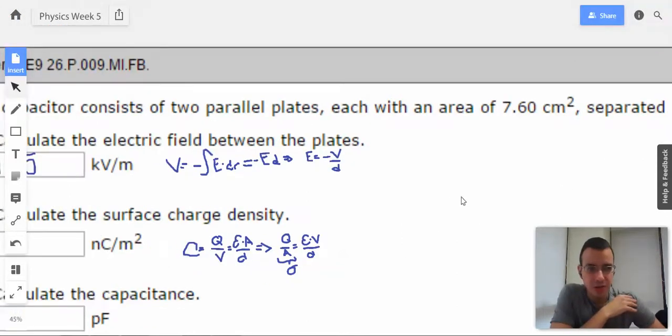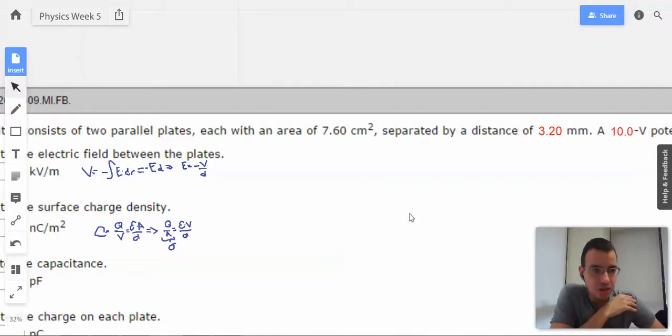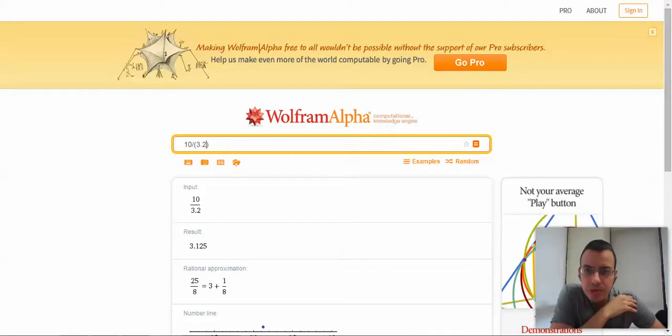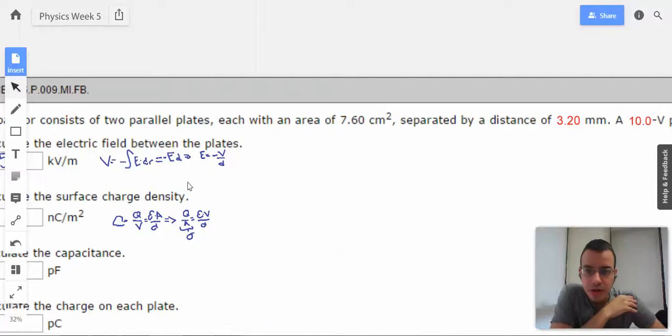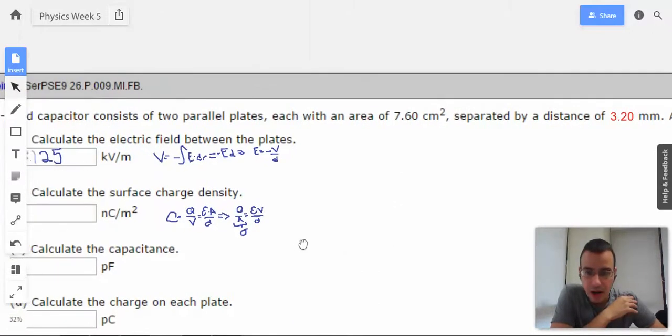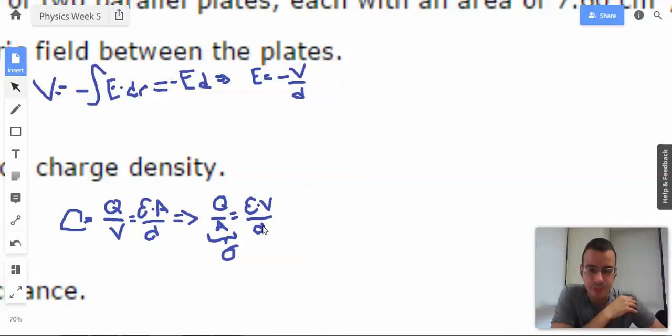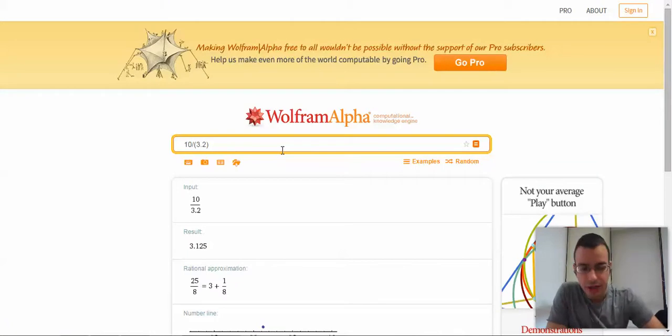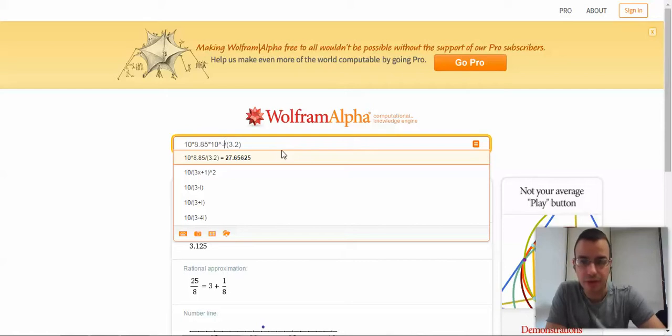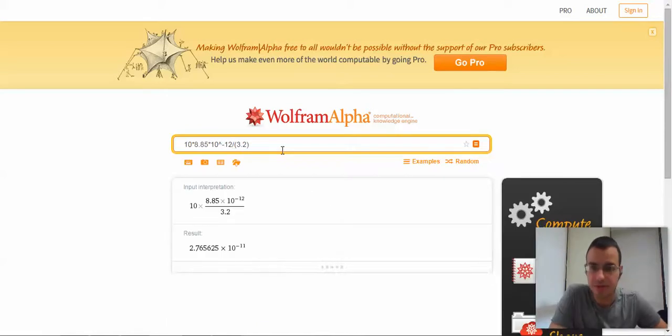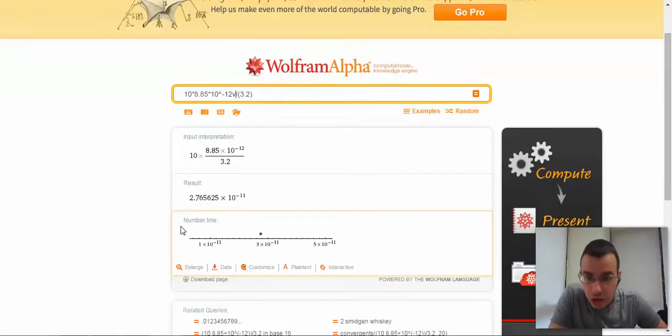Voltage we know is 10. Distance we know is 3.2. So right here, this is just going to be electric field. I'm basically going to take the previous answer and multiply that by 8.85 times 10 to the negative 12th, which is epsilon naught. So 2.76 times 10 to the negative 11th.